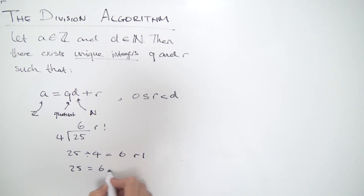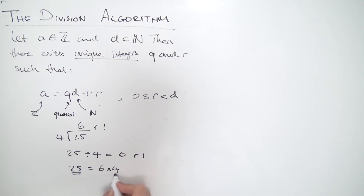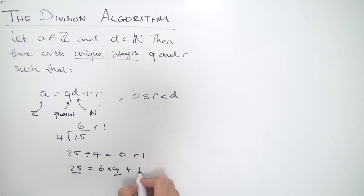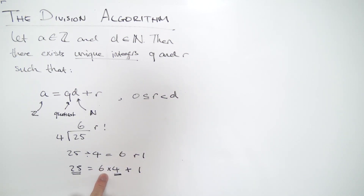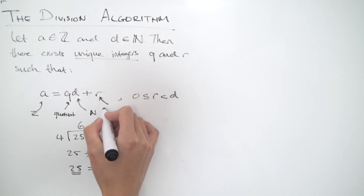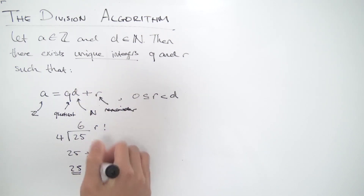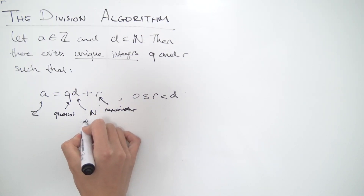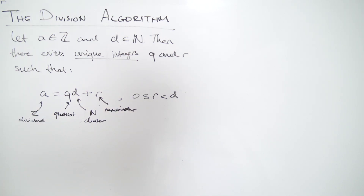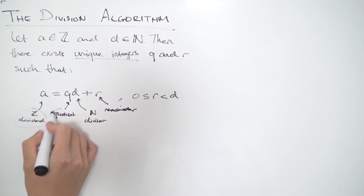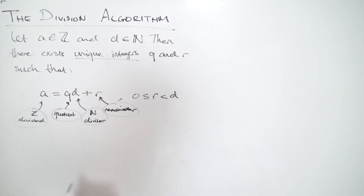We can write it as six times four. So 25 and four are the two numbers you choose, and we have unique integers six and the remainder one, and those two are unique. As you can see, R is between zero and D, which in this case is four. So R is the remainder, D is the divisor, A is the dividend — the thing you're trying to divvy up. So we have the dividend, the quotient, the divisor, and the remainder.